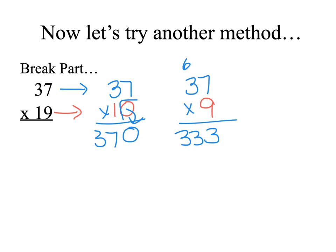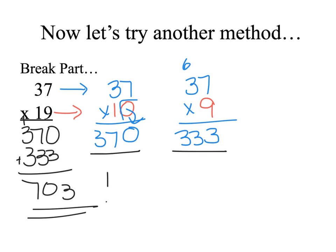And 9 times 3 is 27 plus 6 is 33. Now with these two partial products, 370 and 333, I add them together. 3 and 7 plus 3 is 10 and 3 plus 3 is 6 and 1 more is 7 and we get the same answer of 703.